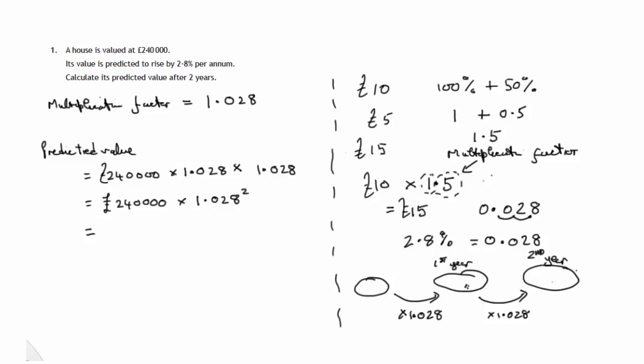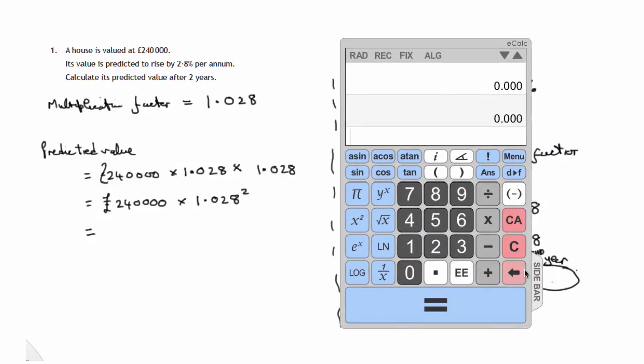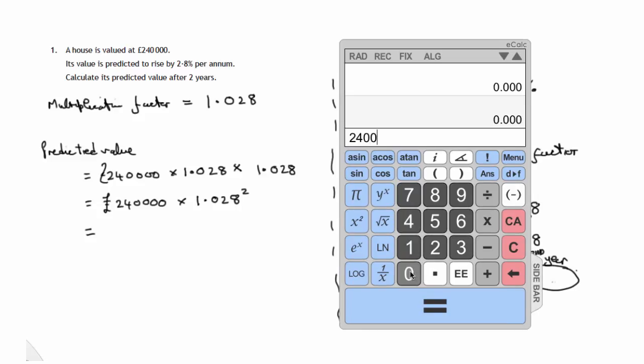Let's see what we get when we work this out on the calculator. So 240,000 times multiplication factor 1.028, square that. There's what we get.